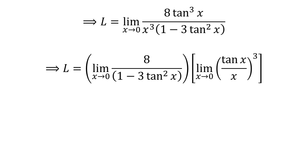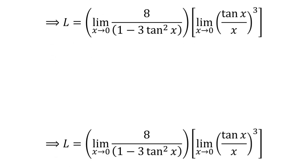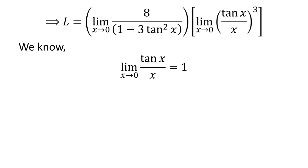Applying properties of limits gives us L is equal to the limit of 8 upon 1 minus 3 times square of tangent of x, times the limit of cube of tangent of x upon x, as x approaches 0. We know that the limit of tangent of x upon x is equal to 1 as x approaches 0, as verified in the video in the upper right corner and linked in the description.